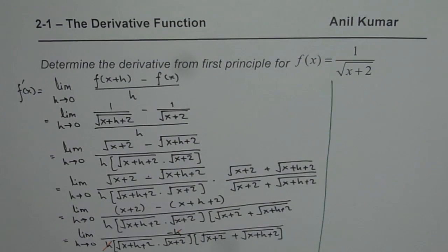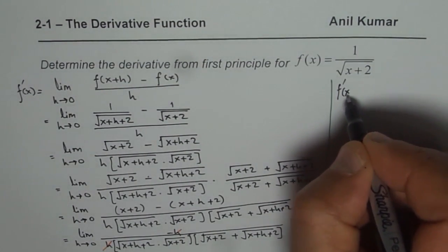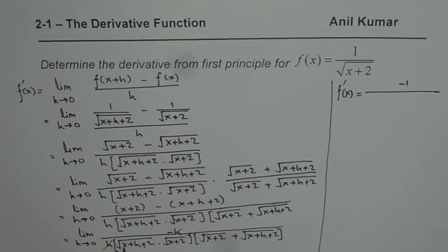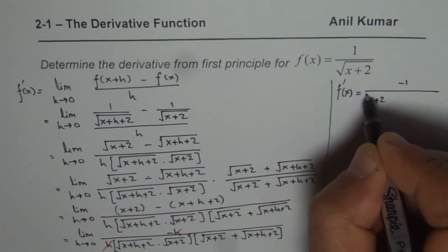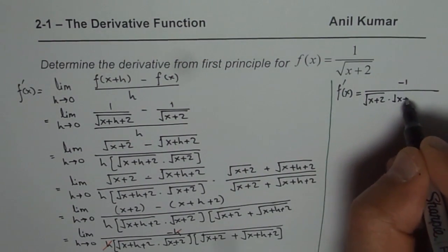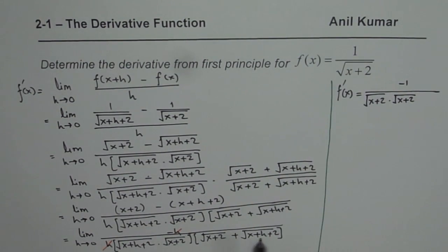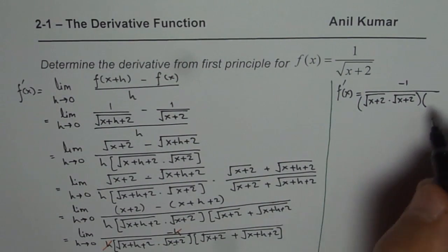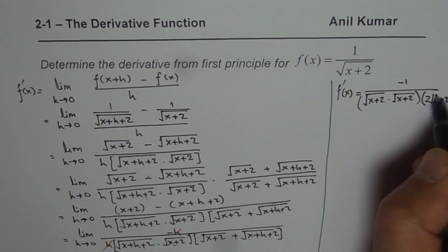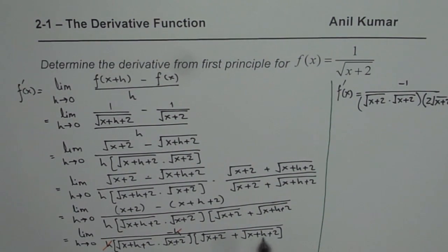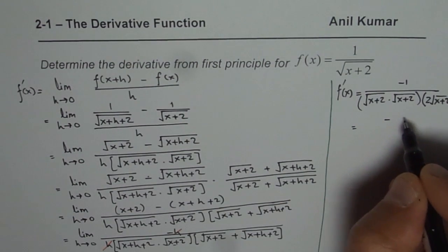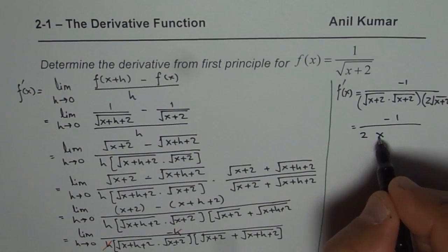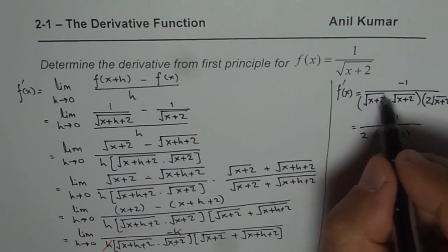So what we get is f dash x is equal to minus 1 over square root of x plus 2 times square root of x plus 2 times 2 times square root of x plus 2. Since x plus 2 plus x plus 2 gives 2 times square root of x plus 2, we can write this as minus 1 over 2 times x plus 2 to the power of 3 over 2. That is cube and square root combined.